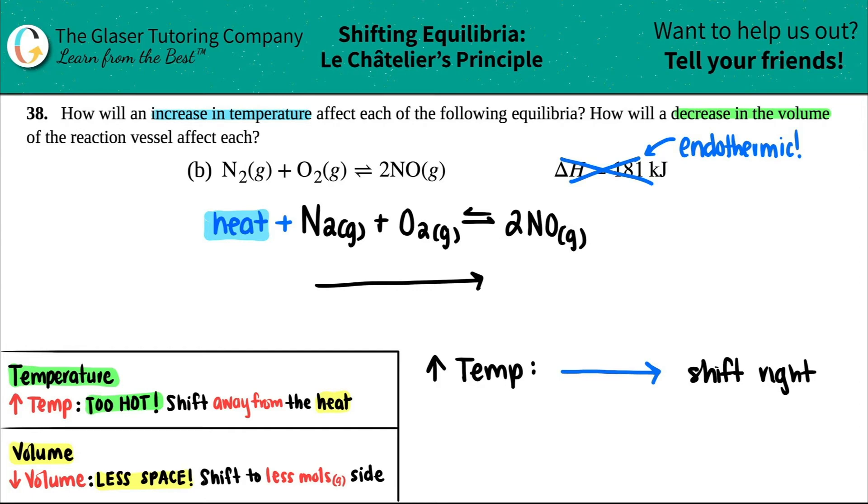Okay, let's go to volume now. They said that we want to decrease the volume. So volume, remember, is just space - the space inside of this reaction vessel. So if you're dropping the volume, that means you have less space. And if you do have less space, you want to favor the side which has less moles of gas on it. So the thing that we have to do here is find out how many moles of gas are on each side.